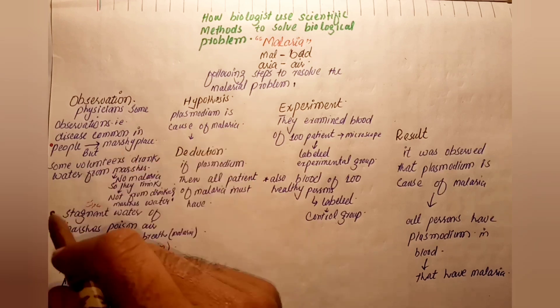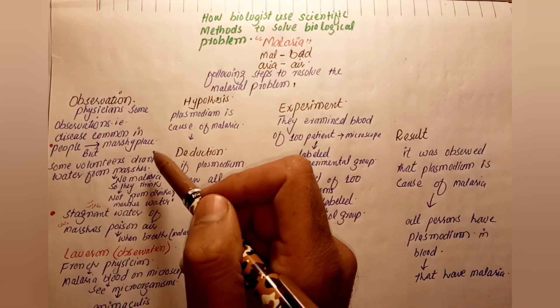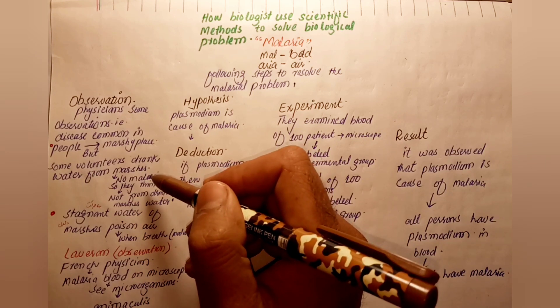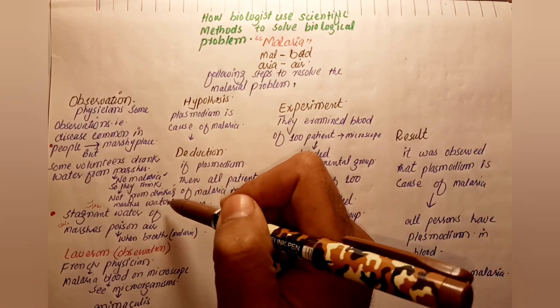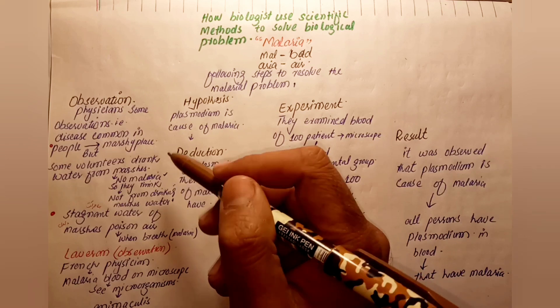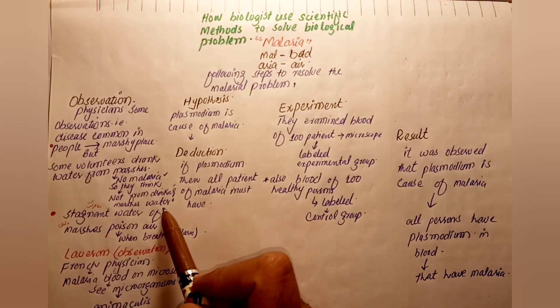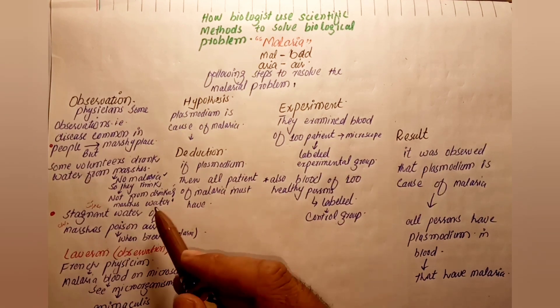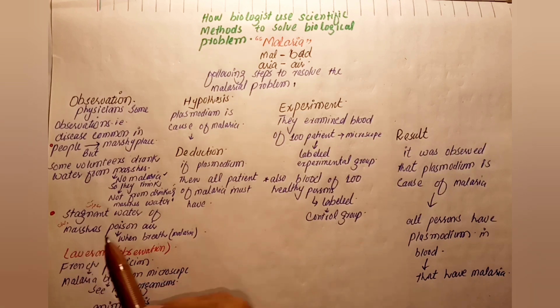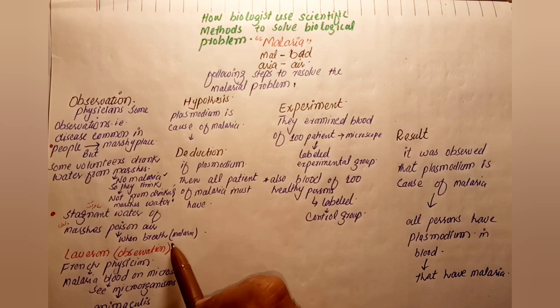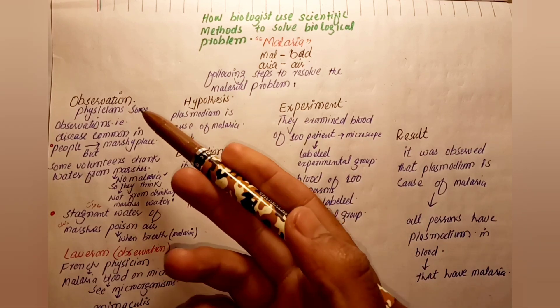Some volunteers drank water from marshes but did not get malaria. So they concluded malaria does not come from drinking marsh water. They observed that stagnant water and the air around marsh areas might be the cause. They thought malaria comes from bad air, which was their initial observation and hypothesis about how malaria spreads.